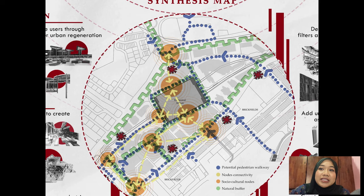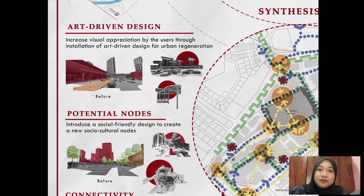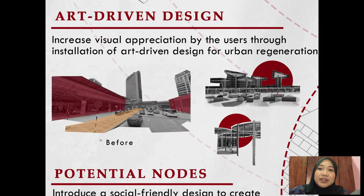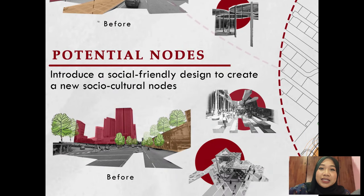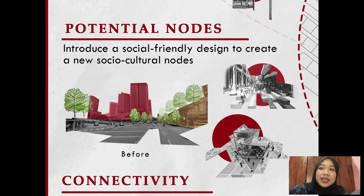Overall, there are six main design potentials based on the challenges and weaknesses mentioned. First, in line with the design aim, it is suggested to have art-driven design in the area, to ensure that visual appreciation by users is increased through installation of art-driven design. Examples include having a vibrant urban design setting that not only provides more seating area but also a visually attractive design appreciated by pedestrian and vehicular users from afar. Second, to introduce more social-friendly design, ensuring the area is culturally responsive and engaged with the settlement in Brickfields, creating a new social-cultural identity — for example, reflecting Indian culture from Brickfields or Malaysian culture.